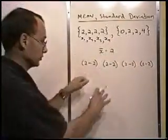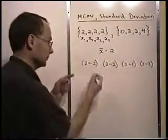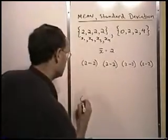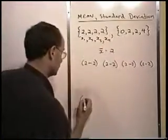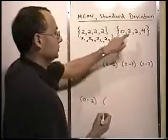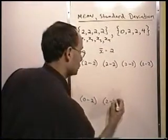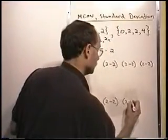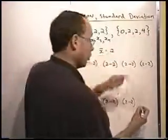So maybe I'm going to do that one right underneath here so we can kind of compare them. The first element here is 0, so 0 minus 2. And then the next element is a 2, so 2 minus 2. Then another 2, and lastly a 4.